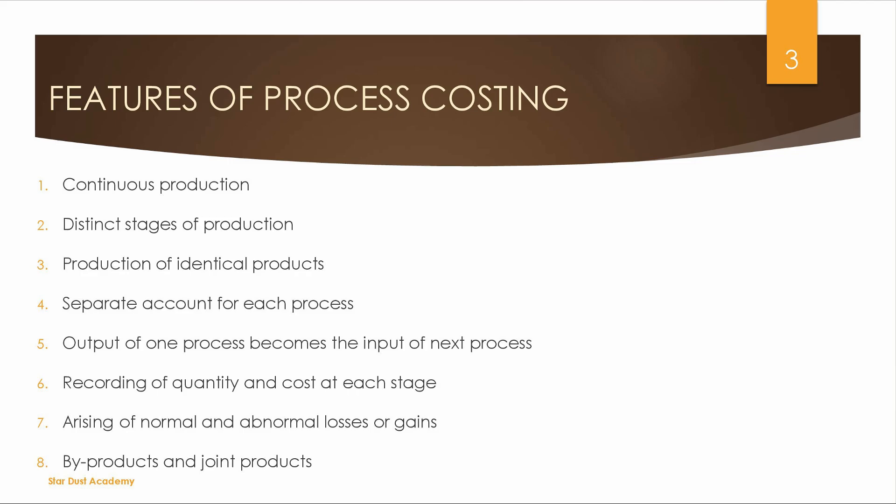Another feature is that the output of one process becomes the input of the next process. For example, in paper manufacturing, wood is used as raw material and pulp is produced, which becomes the input for the next stage, ultimately yielding the finished product.